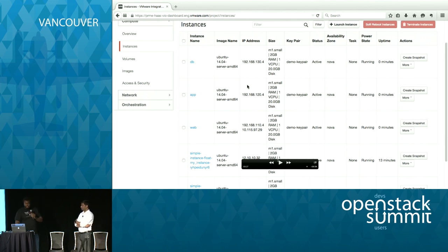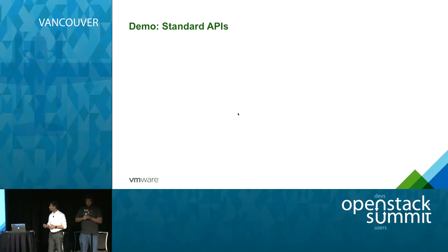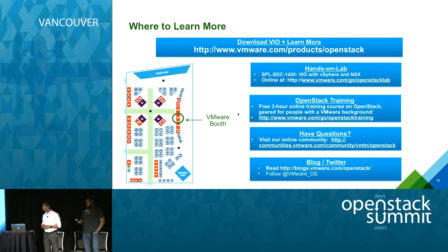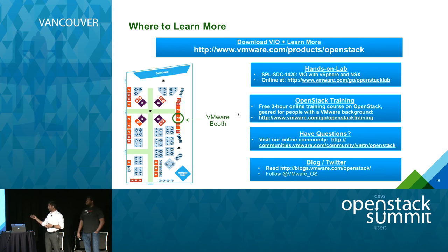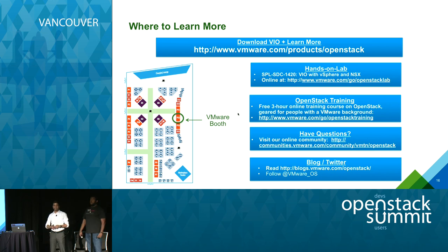That covers the demos. VIO is available for free download on the VMware website. You can visit the booth in the marketplace for a one-on-one demo of all features. Hands-on labs let you spin up your own instance of an OpenStack cloud to play around with. Training will be available next week. There's also an OpenStack community forum where you can post questions and VMware OpenStack experts will respond.